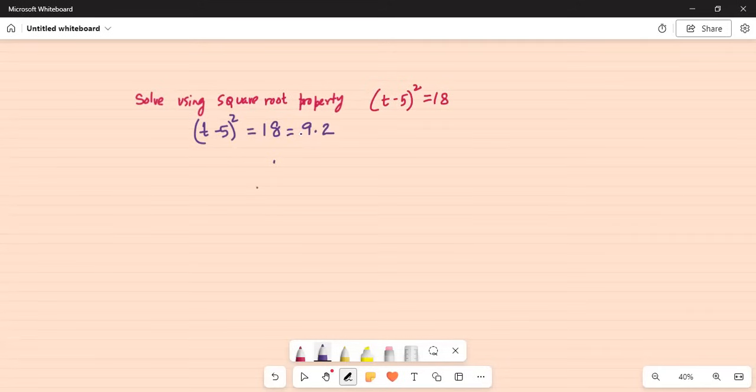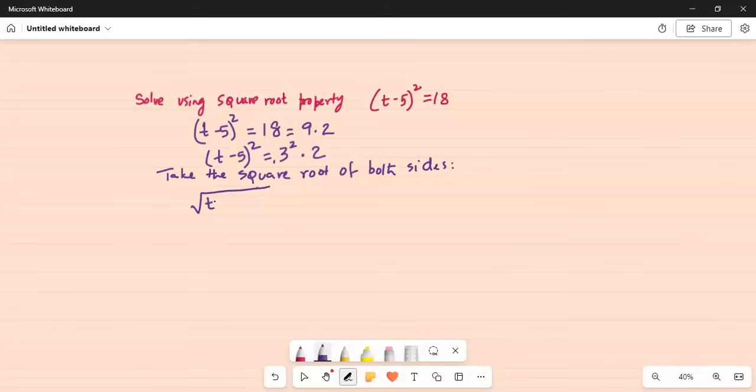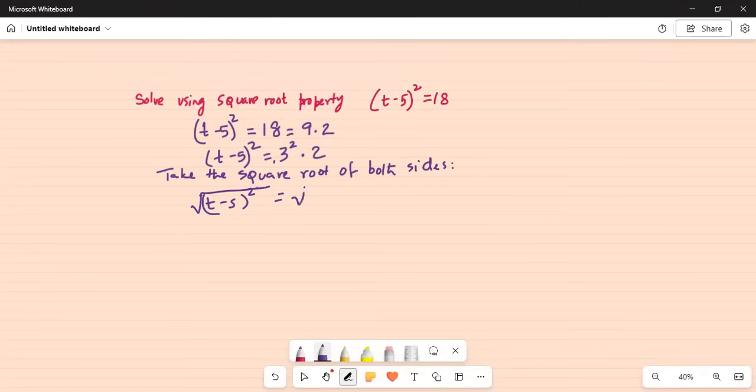Why 9 times 2? Because 9 is a whole square, 3 square is 9. So we can write (t-5)² is equal to 3² times 2. Now take the square root of both sides. We get square root of (t-5)² is equal to square root of 3² times 2.